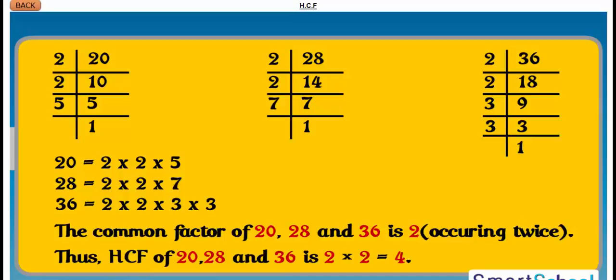Thus, HCF of 20, 28 and 36 is 2 into 2 is equal to 4. Now, we can find HCF of any number using prime factorization.